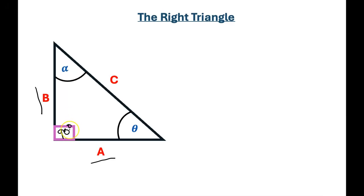It has three sides — A, B, and C — but the two sides A and B are perpendicular, forming a 90-degree angle. The side of this triangle which is side C, that is opposite to this 90-degree angle, is what we call the hypotenuse.